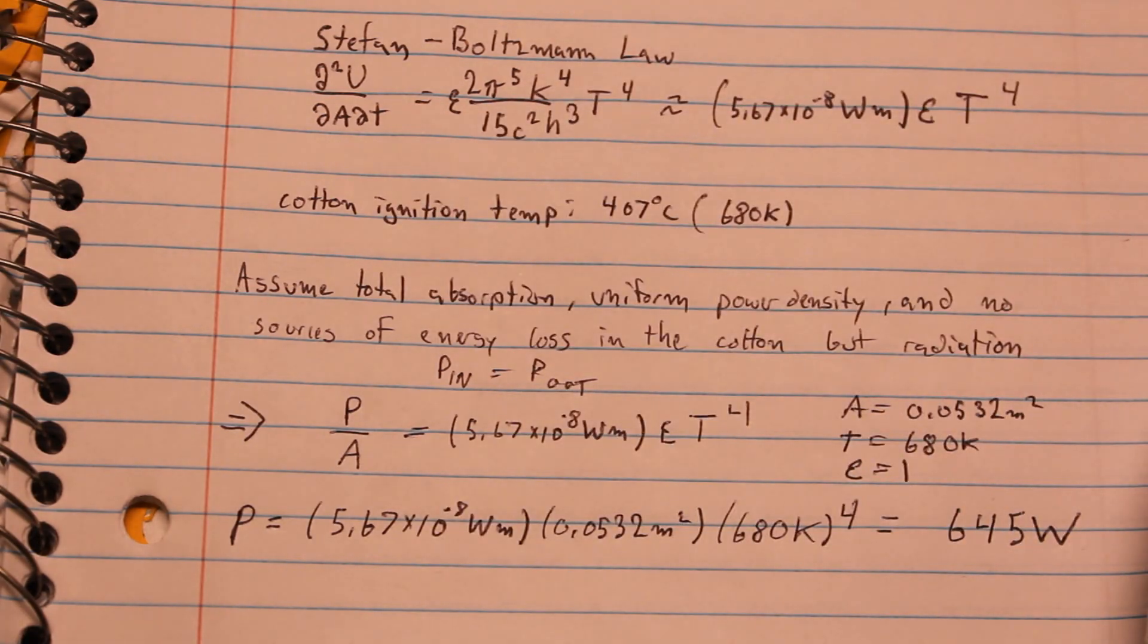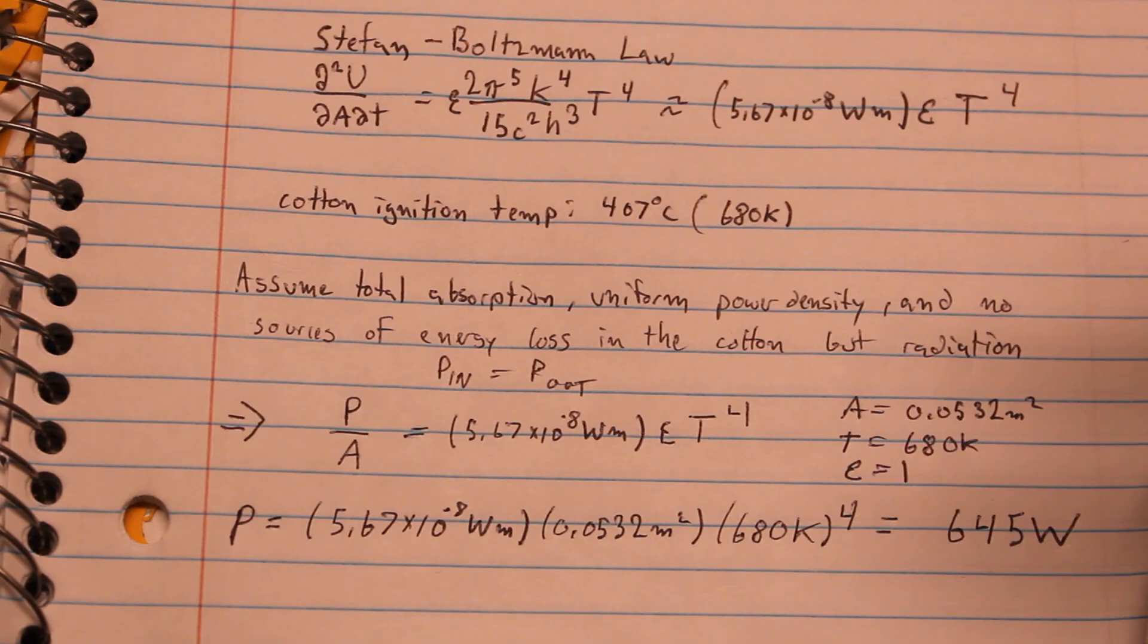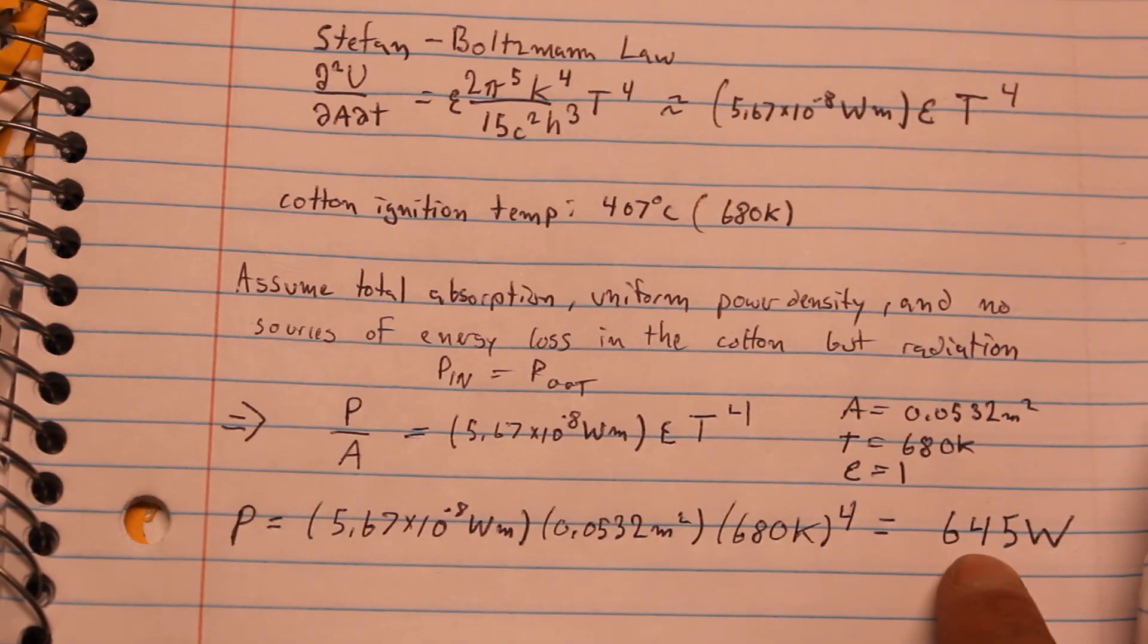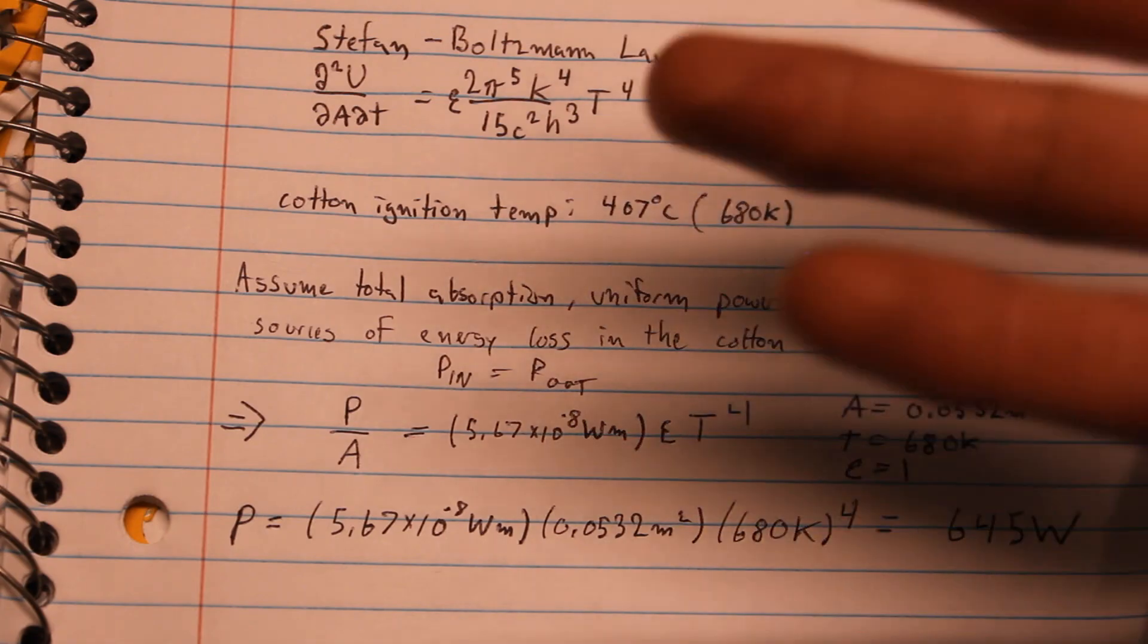Then I can use the Stefan Boltzmann law to calculate the minimum amount of power it takes to light the cotton on fire. And then I get an answer of 645 watts, which in practice is way, way less than what it would take to actually light the cotton on fire because there are so many things that are destroying the beam as it travels over this distance.